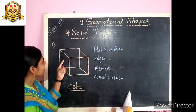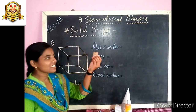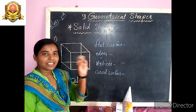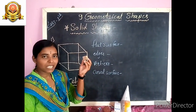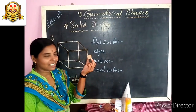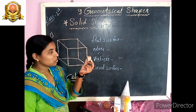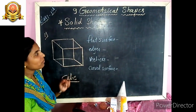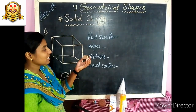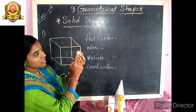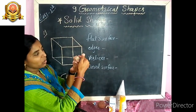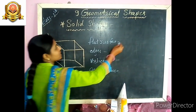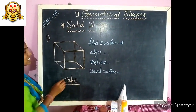Our first example is cube. Look at this — what is this? Yes, this is a dice, and the shape of this dice is cube. This is called a cube. This cube has how many flat surfaces? 1, 2, 3, 4, 5, and 6 — there are 6 flat surfaces. Cube has 6 flat surfaces.